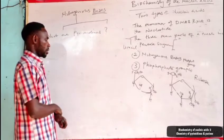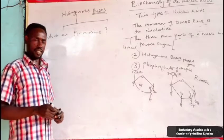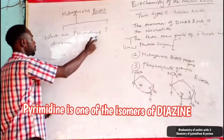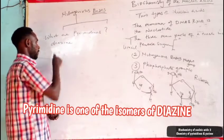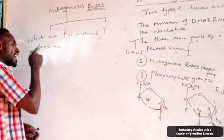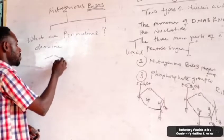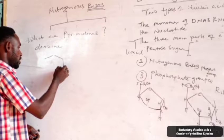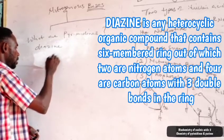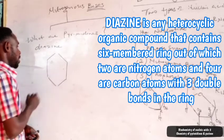In organic chemistry, a pyrimidine is one of the isomers of the diazine. What is diazine? A diazine is a heterocyclic organic compound that is made up of six members — a six-membered heterocyclic organic compound.